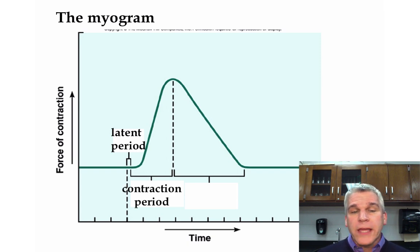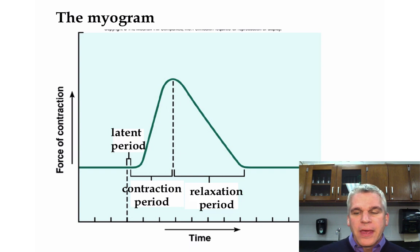During the contraction period, this is when the myosin is going to be pulling on the actin. Once that calcium is reabsorbed and the actin slides back into place, we have the relaxation period. Finally, there does need to be a short period of time in order for the muscle fiber to reset before it contracts again. That is known as the recovery period.